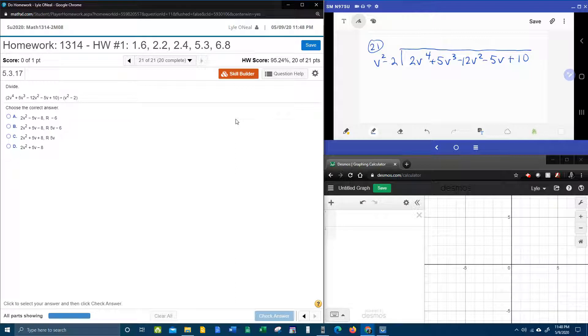First step, how many times does v squared go into 2v to the fourth? Or another way to look at that, you can say, what is 2v to the fourth divided by v squared? Well, that's going to be 2v squared. And if you look at where I write that, I like to keep my like terms lined up.